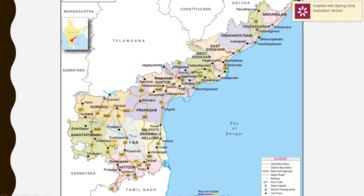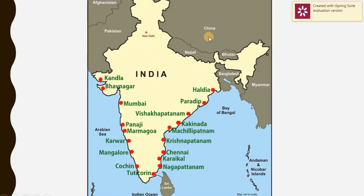Regarding ports: Visakhapatnam is a major public-sector port. Kakinada and Machilipatnam are also ports. Importantly, Krishnapatnam is a major port but it is a private-sector port — India's only large private-sector port. So Visakhapatnam is public-sector, Krishnapatnam is private-sector. This is the basic geography of Andhra Pradesh you should know.